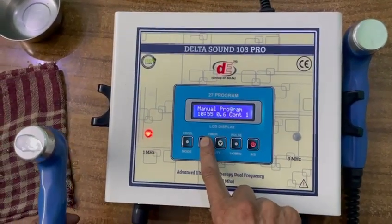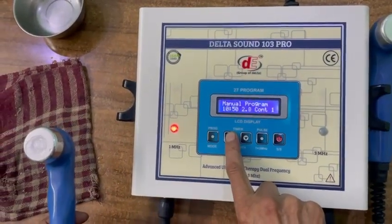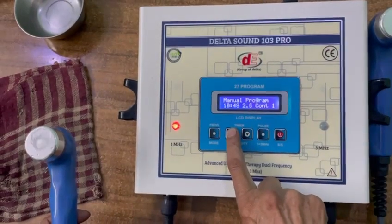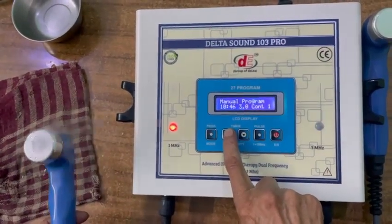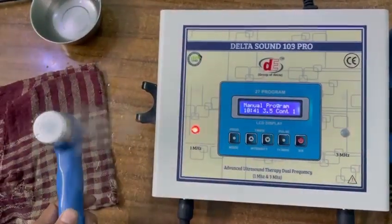Now it is working in 1 MHz continuous mode. You can increase up to 3.5. This is 1 MHz.